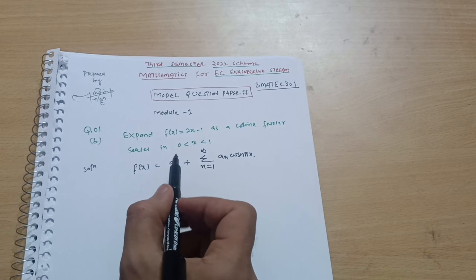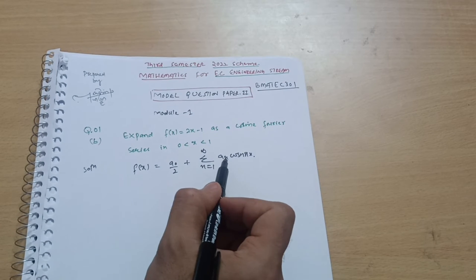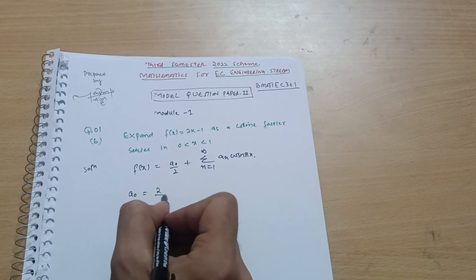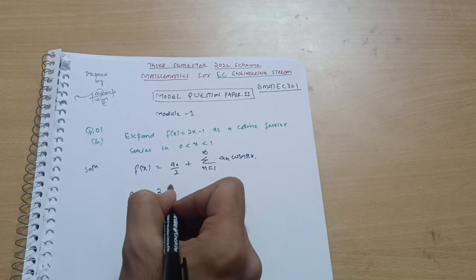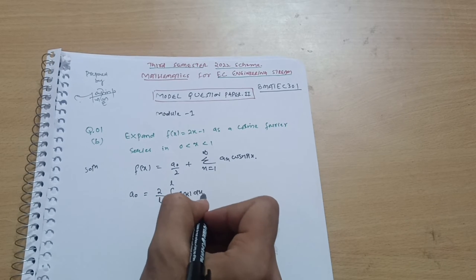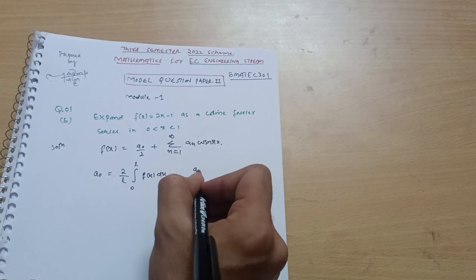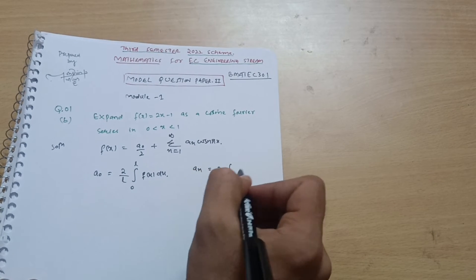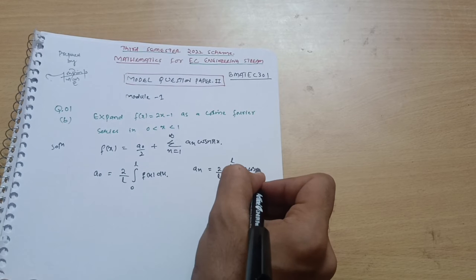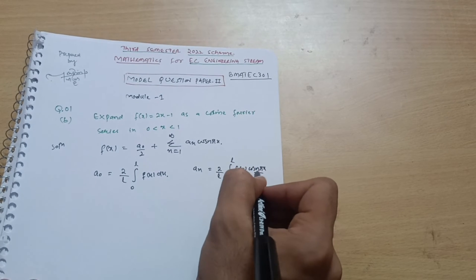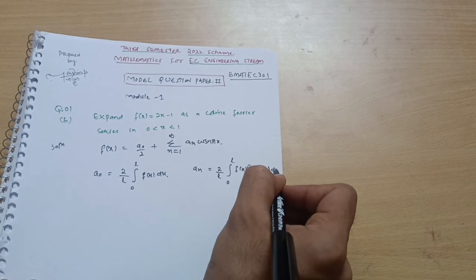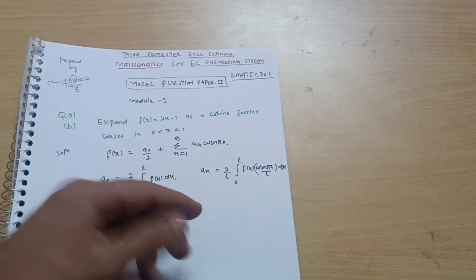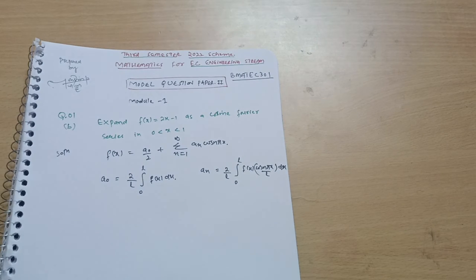Now we have to find out the a₀ and aₙ values. For the cosine Fourier series, a₀ = (2/l) × integral from 0 to l of f(x) dx, and aₙ = (2/l) × integral from 0 to l of f(x) cos(nπx/l) dx. Once we calculate these, the cosine Fourier series will be ready.